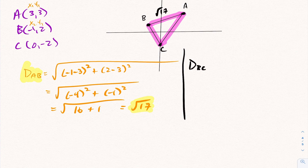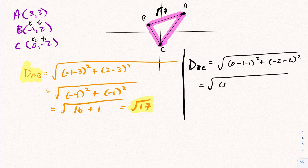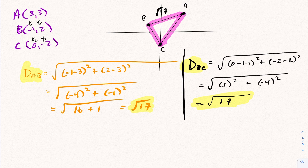Now let's calculate the distance from B to C. Relabel B as X1, Y1 and C as X2, Y2. The distance BC = √((0−(−1))² + (−2−2)²) = √(1² + (−4)²) = √(1 + 16) = √17. So BC is also √17, meaning this triangle is not scalene. It could be isosceles or equilateral — we need to check the final side.